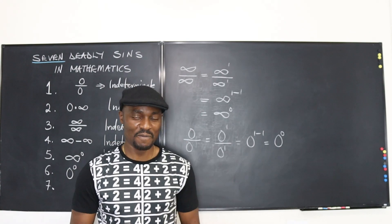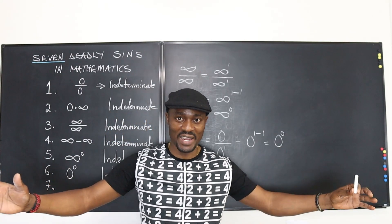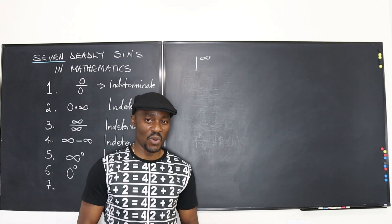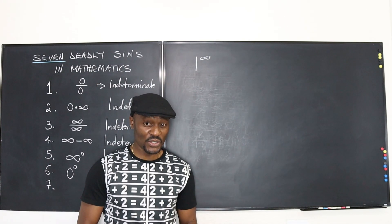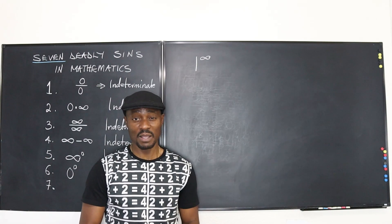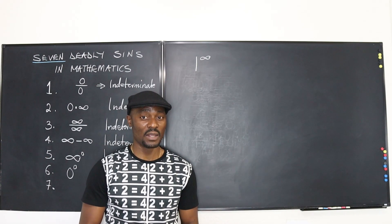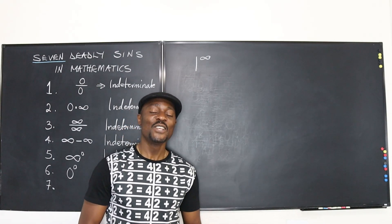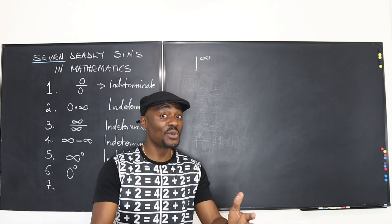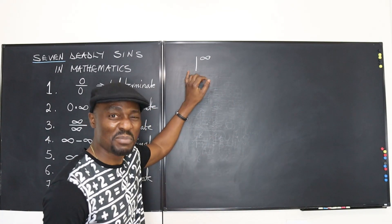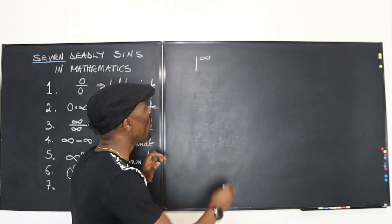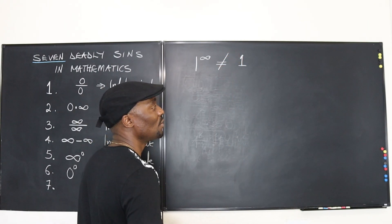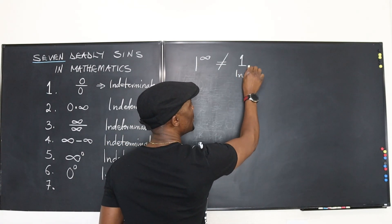The final one is going to blow your mind. This is the final sin: one to infinity. I know what you're thinking — one times one times one times one forever should give you one. But no. One times one times one times one will give you one, but when you see an expression like one to the infinity power, you might think the answer is one. But the answer is no — it is indeterminate. And I'm going to explain.